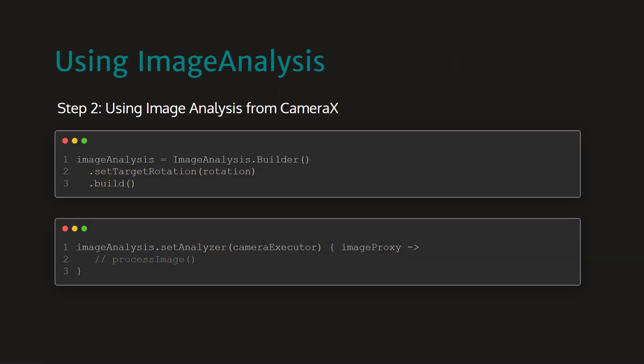We need images to scan barcodes, and to get the images we are using the camera. For making a camera, we used the Jetpack library CameraX. We already learned about building a camera preview in the last section. Now we will use another feature of CameraX that is image analysis.